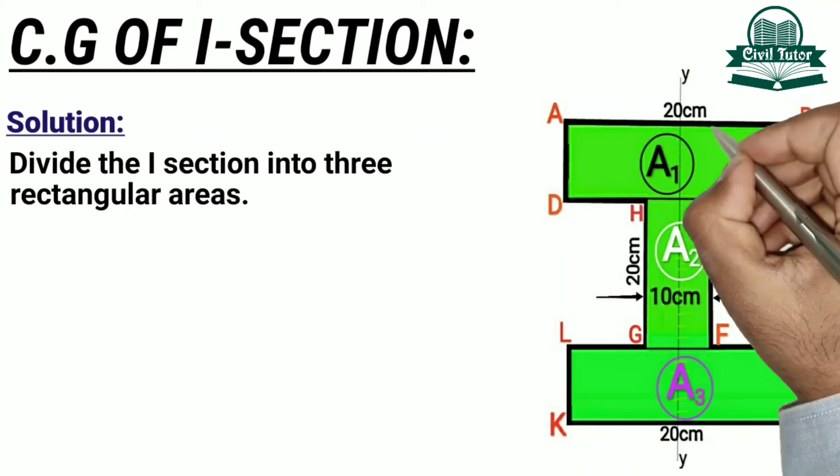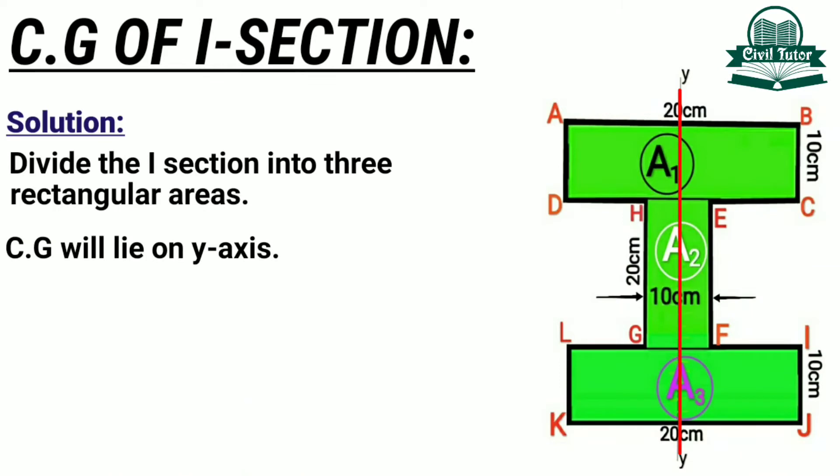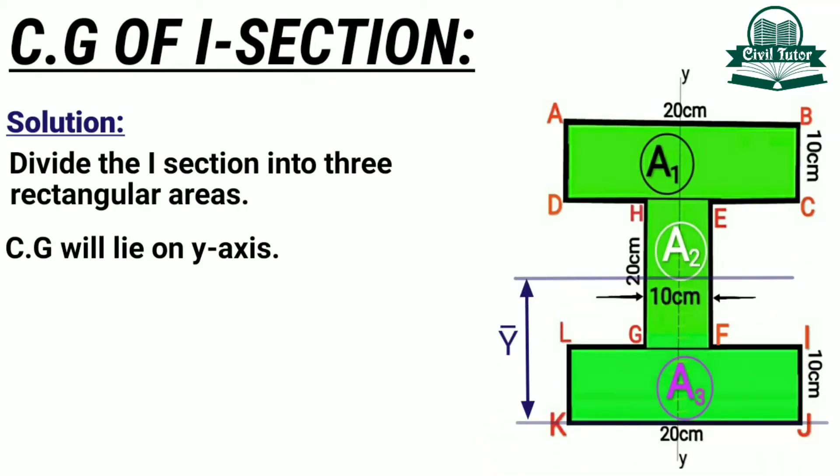Since the I-section is symmetrical about the y-axis, the center of gravity will lie somewhere on the y-axis. Now let's take the bottom line KJ as reference axis for calculation of y-bar. Y-bar is the distance of CG of the I-section from the bottom line KJ which is the reference axis.